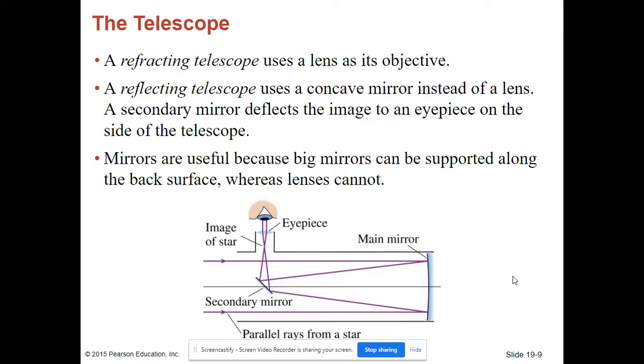Mirrors are useful because big mirrors can be supported along the back surface, whereas lenses cannot. So along the back surface, we can support a mirror, but it would be hard to support a lens here.